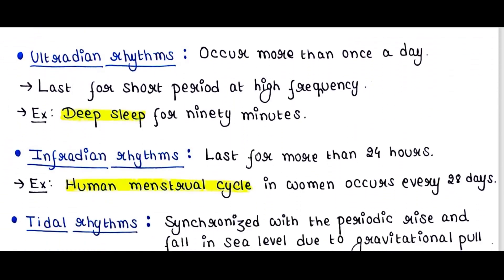Next is ultradian rhythms. Ultradian rhythms occur more than once a day. They last for a short period at high frequency. For example, deep sleep cycles of 90 minutes that we take at night.